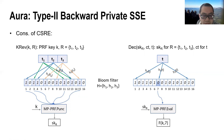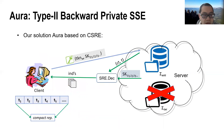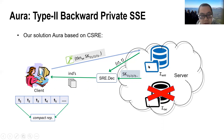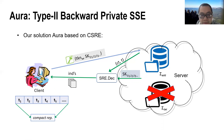In our work, we implement this data structure with a Bloom filter, which is a well-known data structure for compact set representation. Based on our CSRE scheme, we propose our dynamic SSE scheme following the above approach. As analyzed before, this approach leaks less information than the puncturable encryption-based approach, and thus our dynamic SSE scheme can achieve Type 2 backward privacy. For details of our SSE construction and CSRE scheme, please refer to our paper.